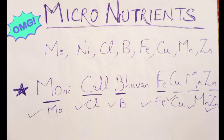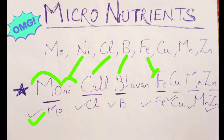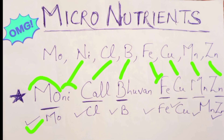There are very simple mnemonics to remember micro and macronutrients for plants. For micronutrients you just have to remember: Moni call Bhuvan Fekumanzan. We all know Bhuvan Bam, the famous YouTuber, and from his name we will remember these elements. From Mo of Moni — molybdenum; Ni — nickel; Kal — chlorine; Bhuvan — boron; Fe — iron; Ku — copper; Manzan — manganese and zinc. Just repeat this three times and you will remember the micronutrients throughout your life.